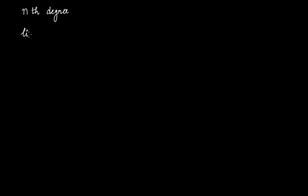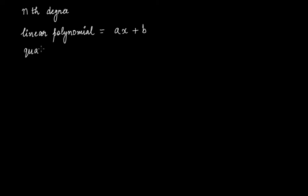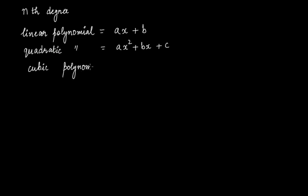In linear polynomial in one variable, the linear polynomial is expressed as ax plus b. If you look at quadratic polynomial in one variable, then this is expressed as ax squared plus bx plus c. The cubic polynomial in one variable is expressed as ax cubed plus bx squared plus cx plus d. It is expressed in this form.